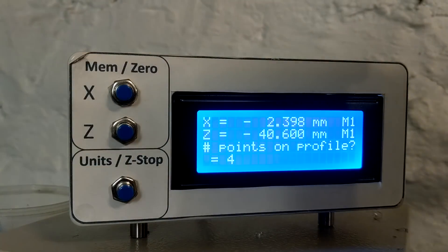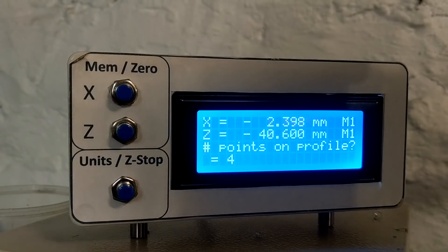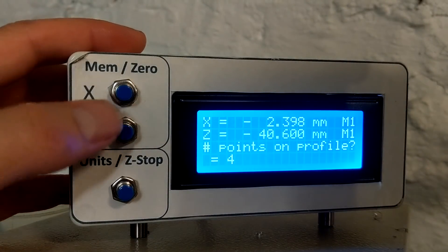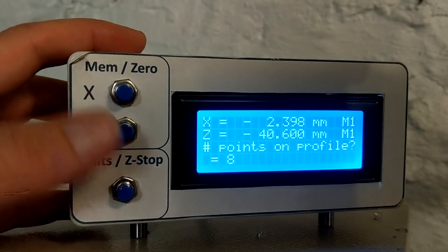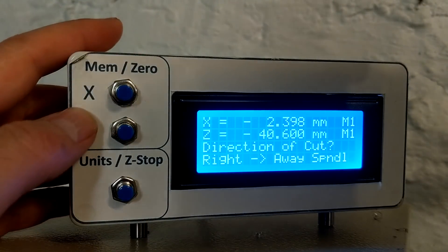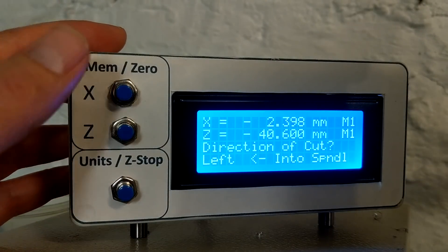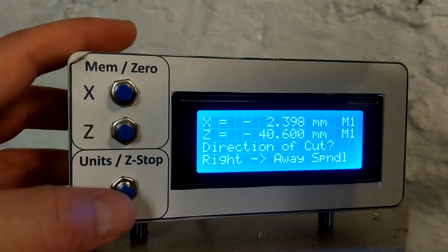Number of profile points. This piece has, well, it actually has seven points, but we're going to enter eight. We're going to enter a last one that's just off the part. And direction of cut. We're going to go right away from the spindle. The other option is left into the spindle. We're going to choose right.